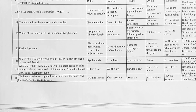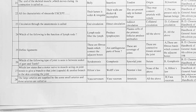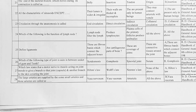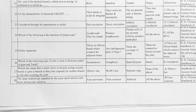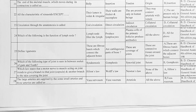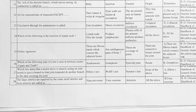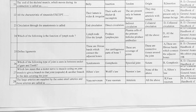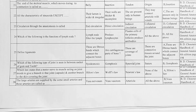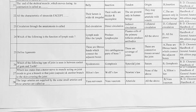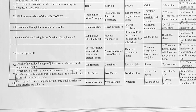Next, circulation through the anastomosis is called — options: A. end circulation, B. direct circulation, C. indirect circulation, D. collateral circulation. The correct answer is option D, collateral circulation.